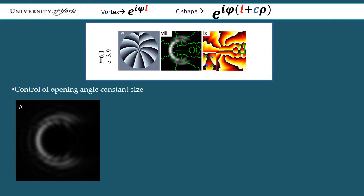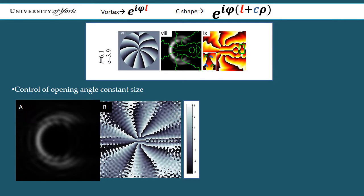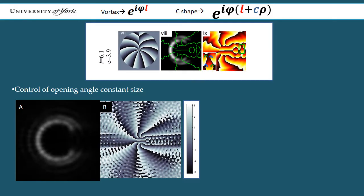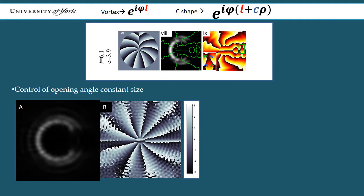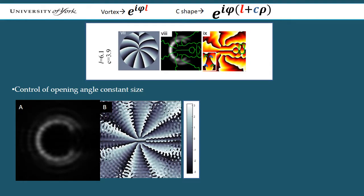Animation A shows the Fourier plane intensity as the opening angle is increased, and animation B shows the Fourier plane phase as the opening angle is increased. The opening can be seen to be produced by a grid-like stacking of phase singularities of opposite sign.